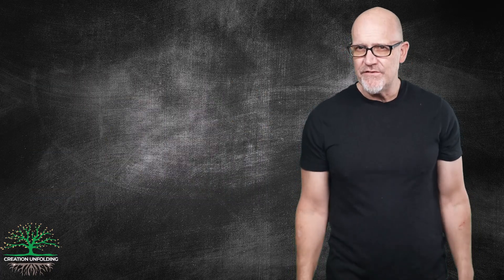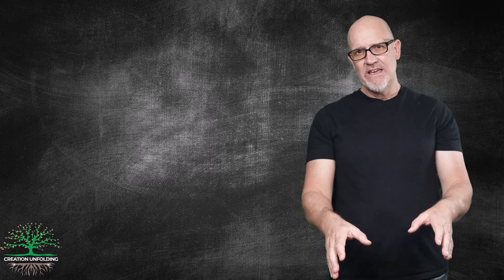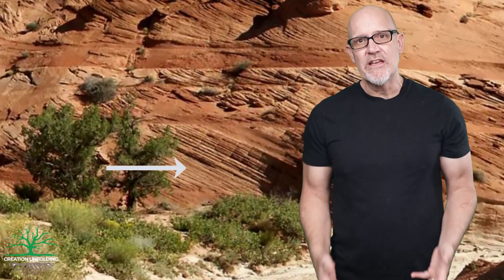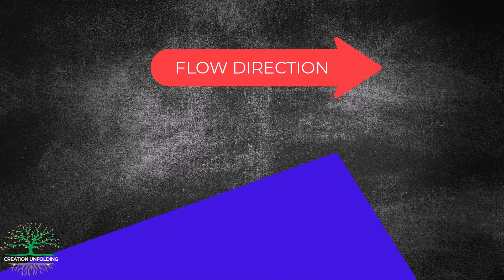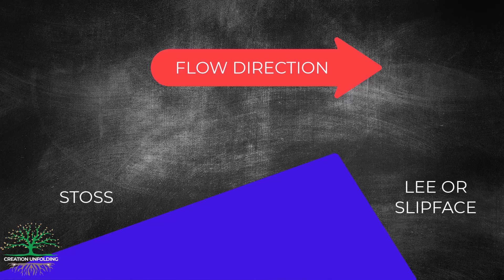The next important sedimentary feature is crossbedding. Since sand is the most easily transported kind of sediment, most crossbeds are found in sandstones. Crossbedding occurs when sand grains moving in a medium — air or water — begin to pile up on top of each other, forming sand dunes. When this happens, two surfaces form on either side of the growing mound. The surface facing upstream is called the stoss side, and the surface facing downstream is called the lee side, or the slip face.